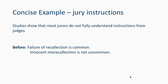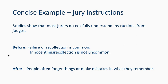An example of conciseness is jury instructions. California previously had instructions using confusing language for a lay audience — for example, 'Failure of recollection is common. Innocent misrecollection is not uncommon.' Everyday people sitting on a jury shouldn't have to unpack that language. A clearer revision in plain language is simply: 'People often forget things or make mistakes in what they remember.'